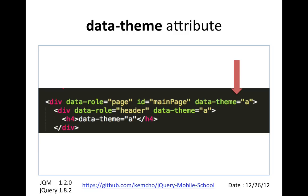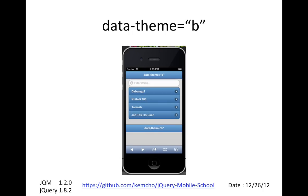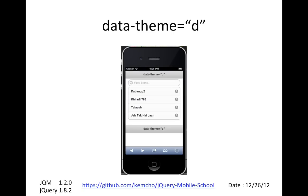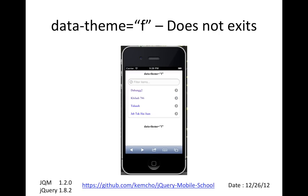There are built-in themes you can use. Theme A looks like this. Theme B looks like this — it's blue. C is whitish. D is gray. E is yellowish.